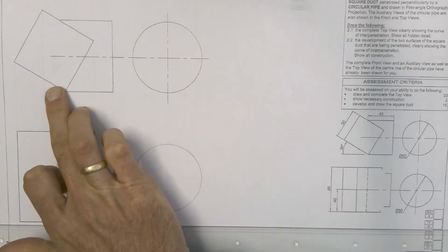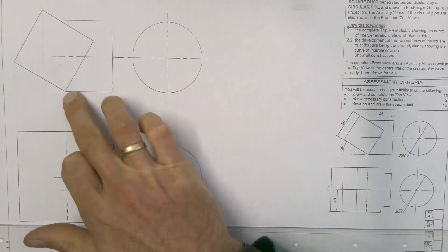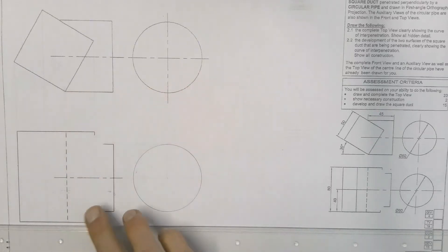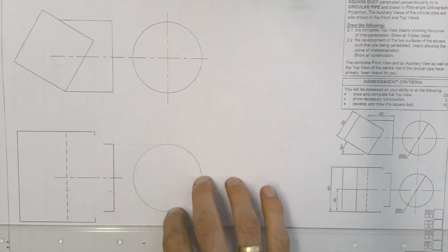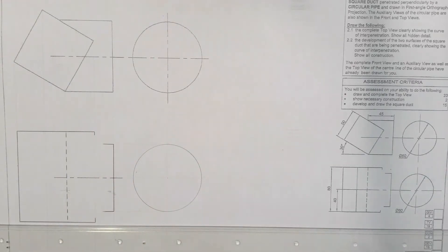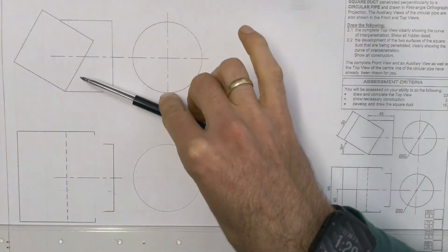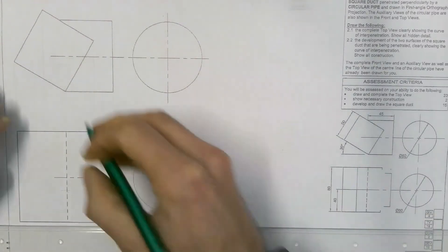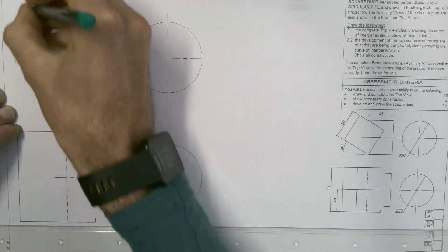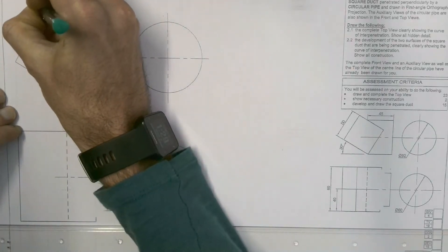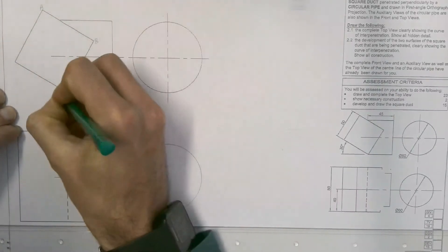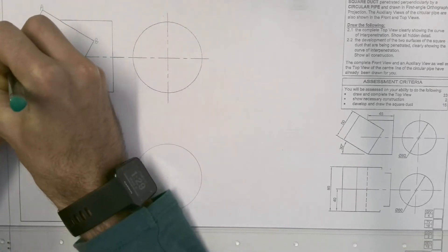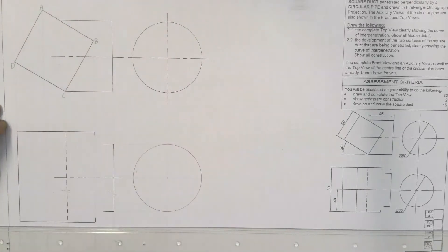In this question we have a square base prism which has a cylinder hitting into the side of it. We're going to look at how to find the interpenetration curve, which is going to be in the top view - which is unusual for these kinds of questions. First of all, as always, we're going to start by numbering our main pipe, seen here in our front view, using letters for each of the corners.